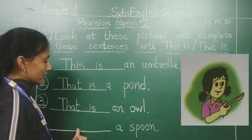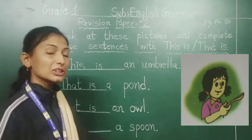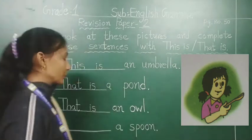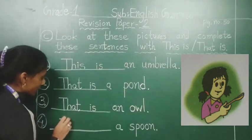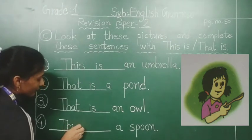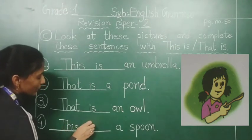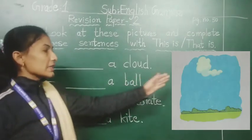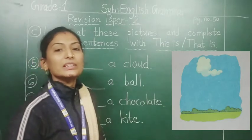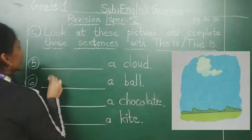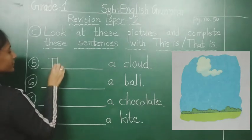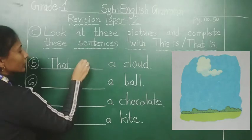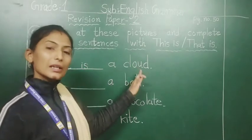Fourth number: look at this picture — this is a spoon, so we will write here: This is. Five — see this picture: that is a cloud, so we will write here: That is. That is a cloud.